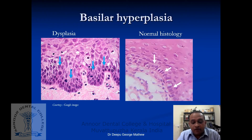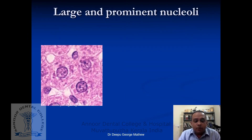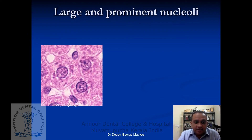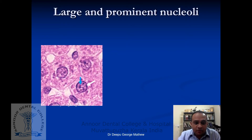The second feature is large and prominent nucleoli. If you look at the nucleus very closely in dysplastic cells, the white arrow points to a nucleus inside the cell, and within the nucleus the blue arrows are pointing to nucleoli. Large and prominent nucleoli is another feature of dysplasia.